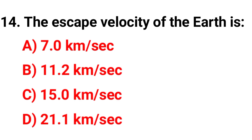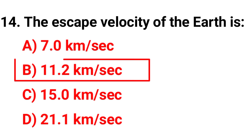Question 14: The escape velocity of Earth is — the correct answer is option B — 11.2 kilometers per second.